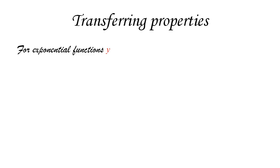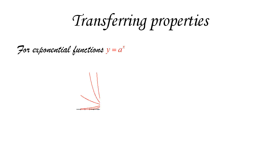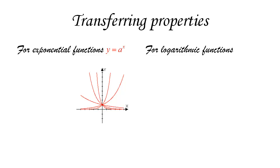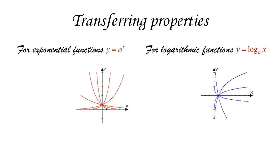Exponential functions have the form y equals a to the power x, and their graphs look different depending on whether a is greater or less than one. Correspondingly, logarithmic functions have the form y equals log base a of x, and their graphs are just the original exponentials flipped around the diagonal.